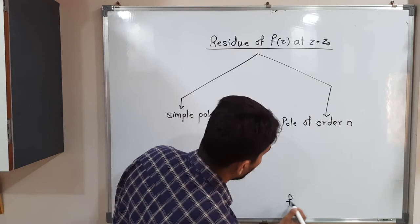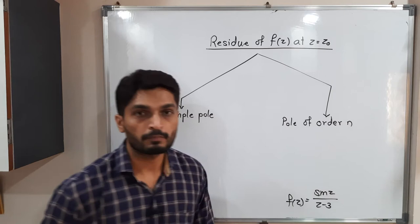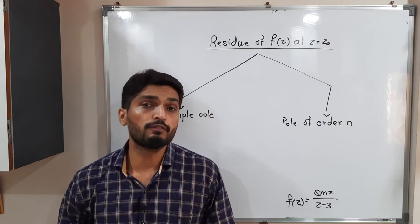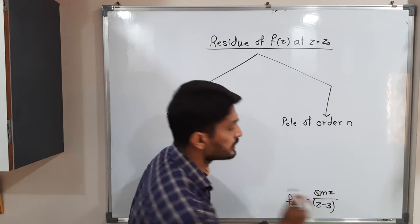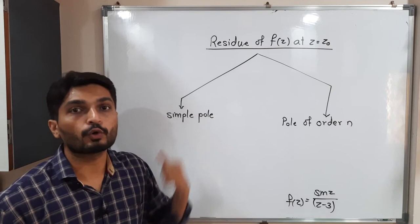Suppose we have a function f(z) = sin(z)/(z - 3). At which point will the denominator be zero? Obviously at z = 3. So z = 3 is a pole. What is the power of that bracket? There is no bracket, so we consider this bracket to have power 1. This is a pole of order 1, which we can also call a simple pole.